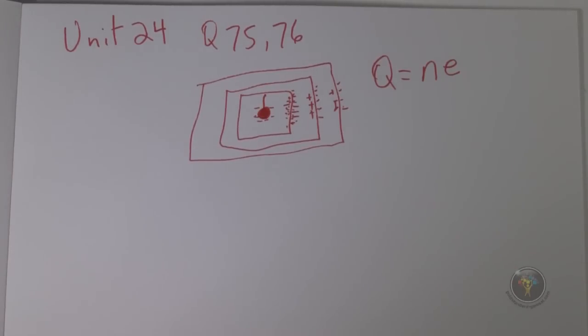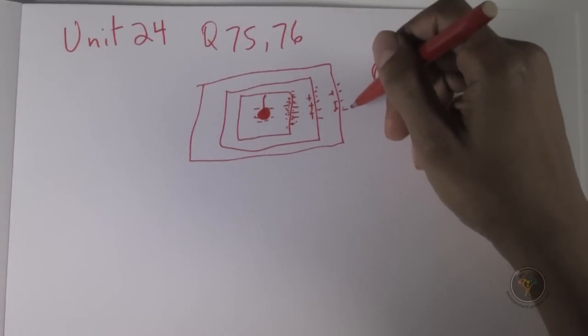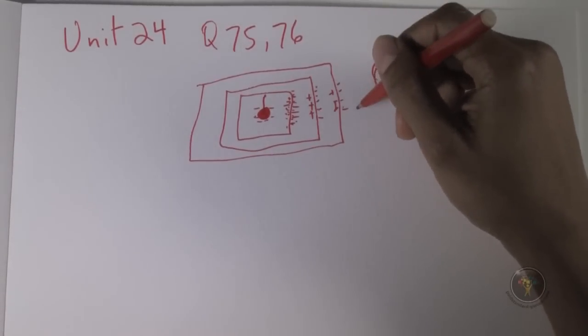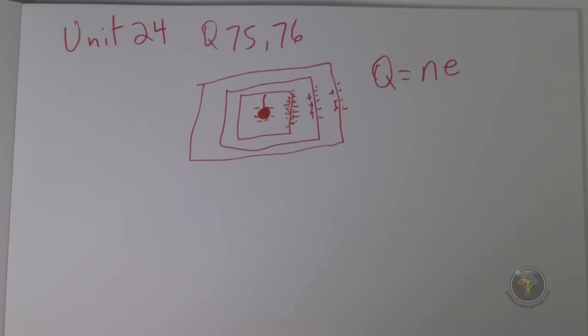And then the second question, the induced charge on the outer surface of the largest sphere, so way out here, what would that be equal to? And of course, that's still equal to minus Q. So 76 is D.